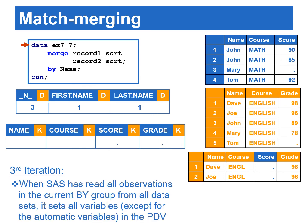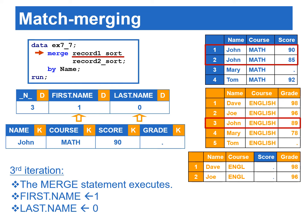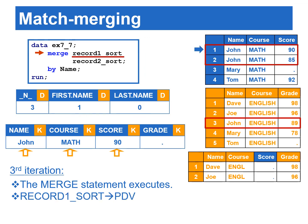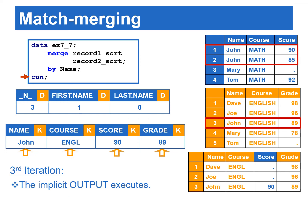At the beginning of the third iteration, SAS has read all observations in the current by group from all data sets, and sets all variables in the PDV to missing except for automatic variables. The third by group is when name equals John. For this by group, there are two observations in record one sort and one observation in record two sort. When the merge statement executes, first.name is set to one and last.name is set to zero, because SAS will process the first observation in this by group. The first record where name equals John from record one sort is copied to the PDV, then the third record where name equals John from record two sort is also copied to the PDV. Note that course is not used as a by variable but exists in both input data sets, so the values read from record two sort replace the values from record one sort, and English is truncated to ENGL with four bytes. The implicit output copies the contents from the PDV to the output data.